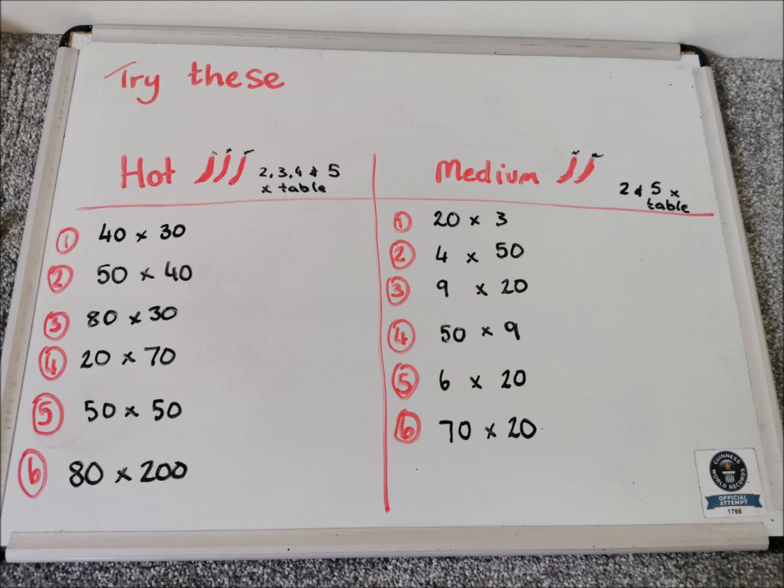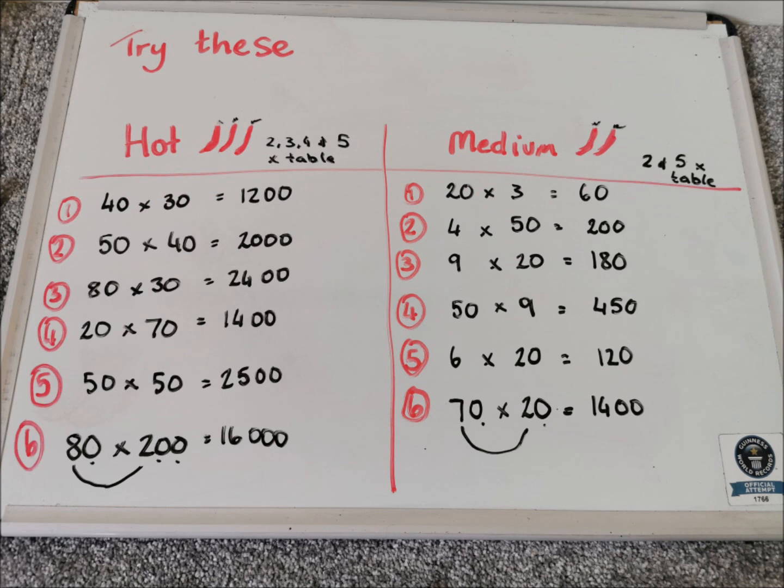Okay. So here are the answers for the questions that we had. So 40 times 30 is 1,200 because 4 times 3 is 12. Two zeros in the question. Two zeros added on to the answer.